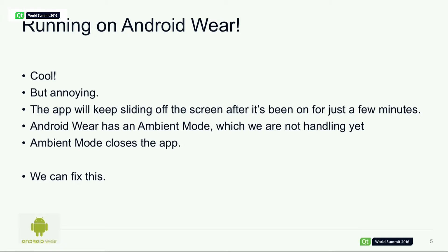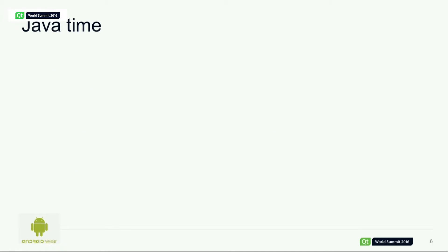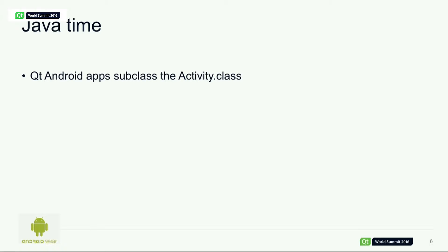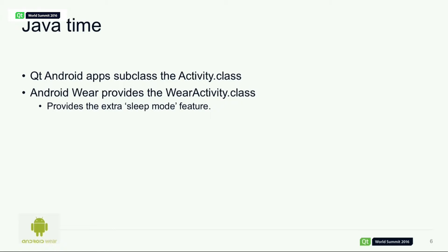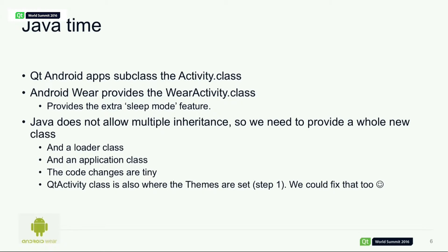We can fix that fairly easily with some Java code. A Qt Android app running on Android is basically subclassing the Activity class — the Java class which runs on any Android device. For Android Wear, we have the WearActivity class in Java, which provides the ambient mode feature. You can't do multiple inheritance on a Java class, so what we do is create a new class which subclasses the WearActivity, and then we add a couple more classes to handle it. Here we have a short example of the code we needed to change — we're basically just changing the activity to a WearActivity and making a simple call to set ambient enabled. Not a great deal needed.